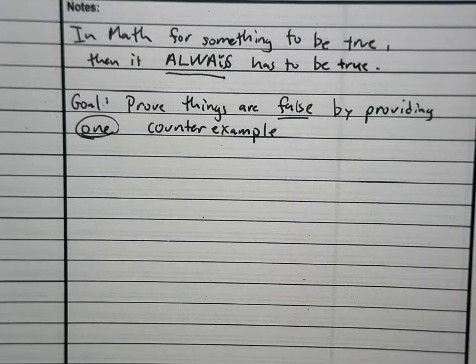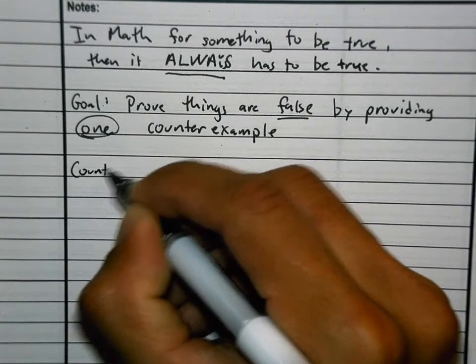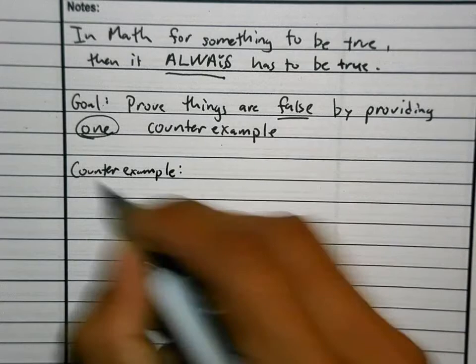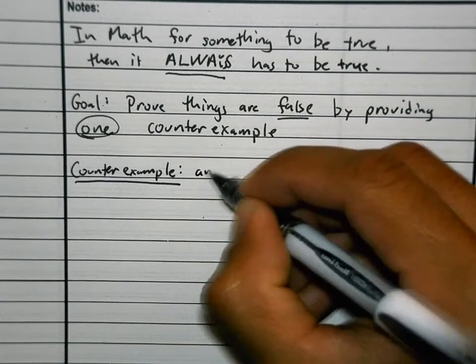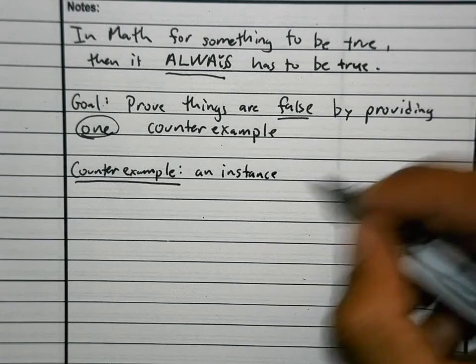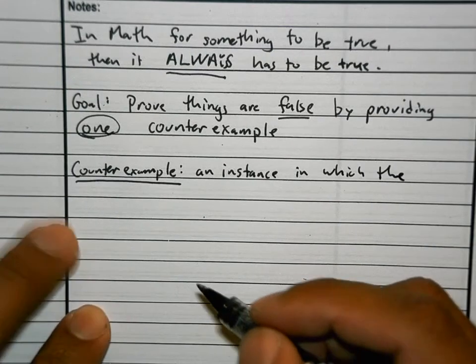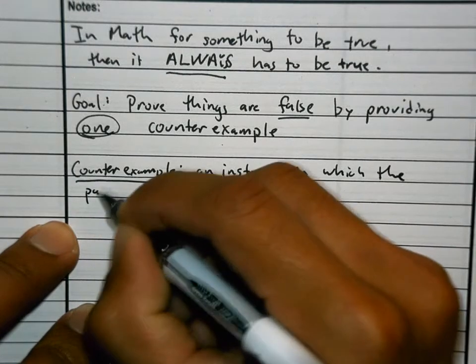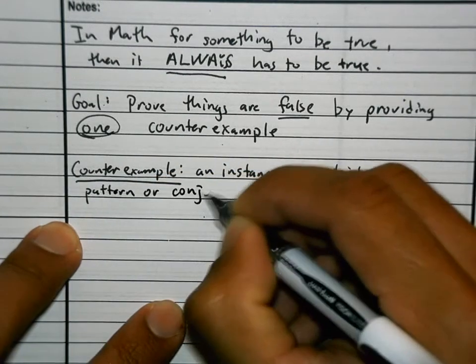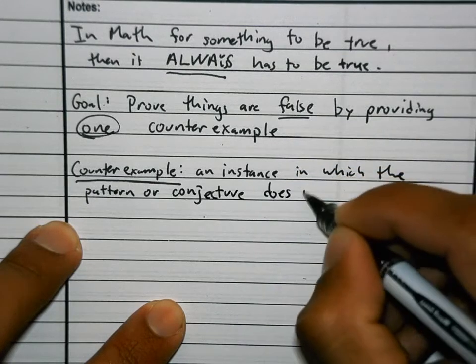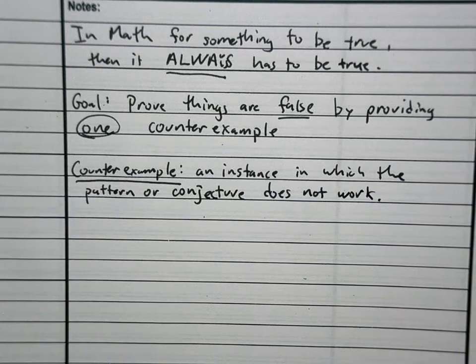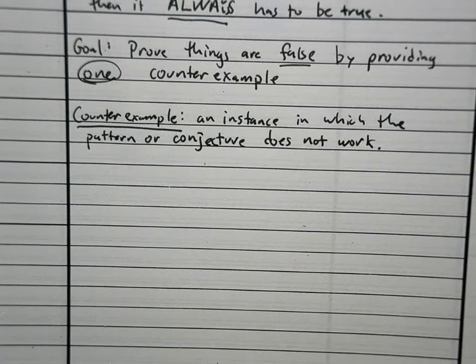And the last thing I think I need to define before we do an example is what is a counter example. So let's define what that word means. Counter example. What it means. It's an instance in which the pattern or conjecture does not work. A counter example is an instance in which the pattern or conjecture does not work.